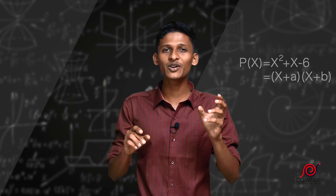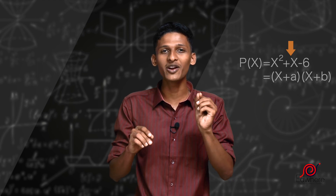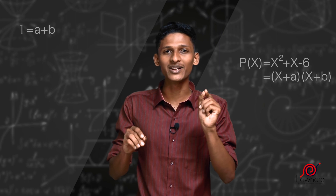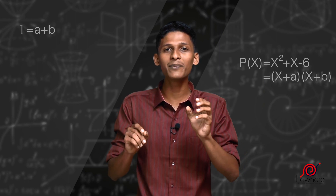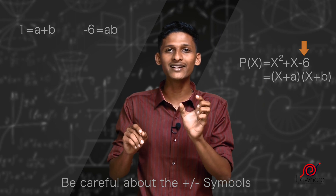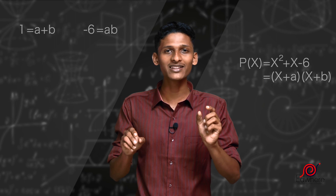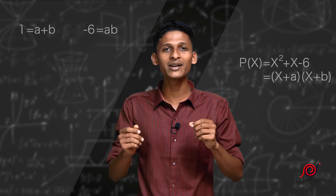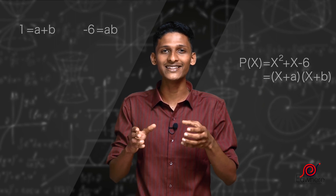For x² + x − 6, the coefficient of x is 1, so a + b = 1. That is, a plus b equals 1. Then, the constant term is −6, so a times b equals −6. We put the condition that a + b = 1 and a × b = −6.